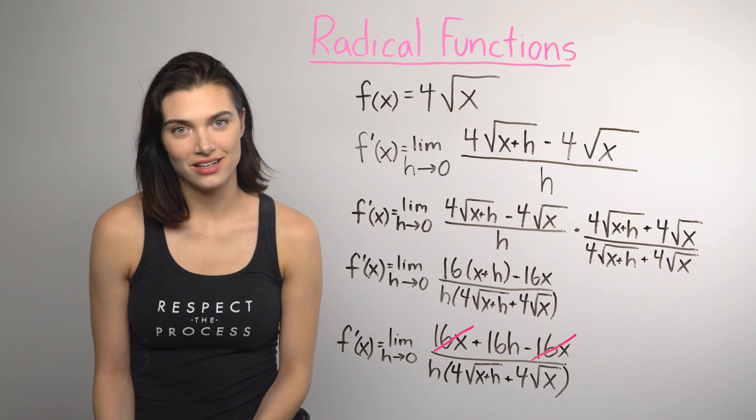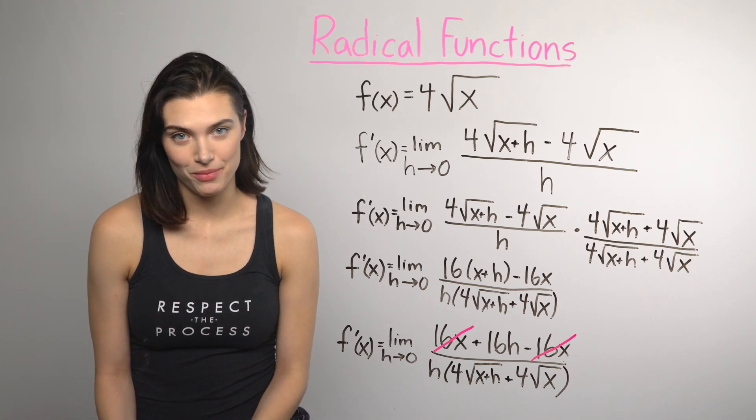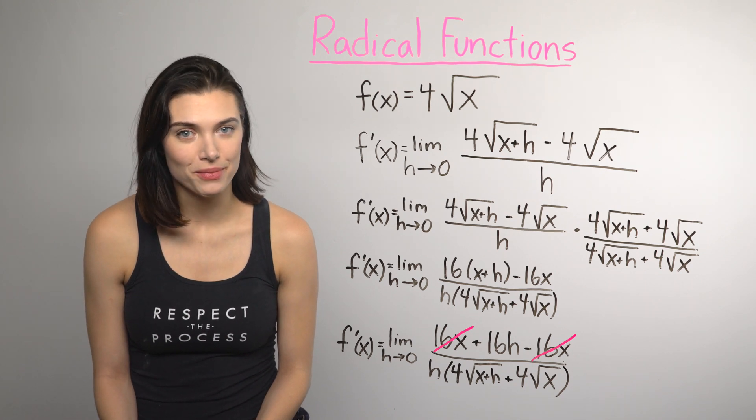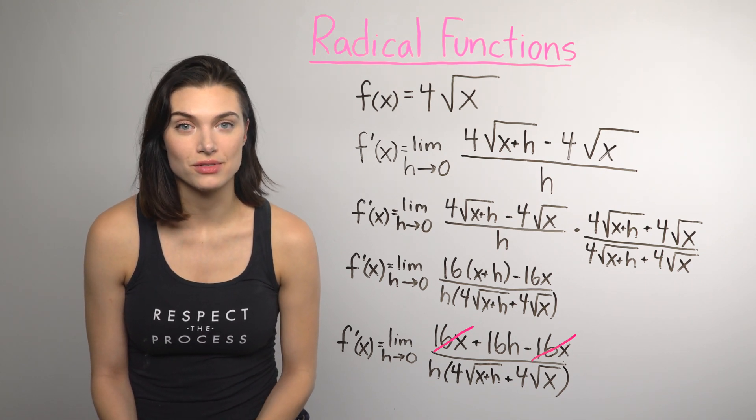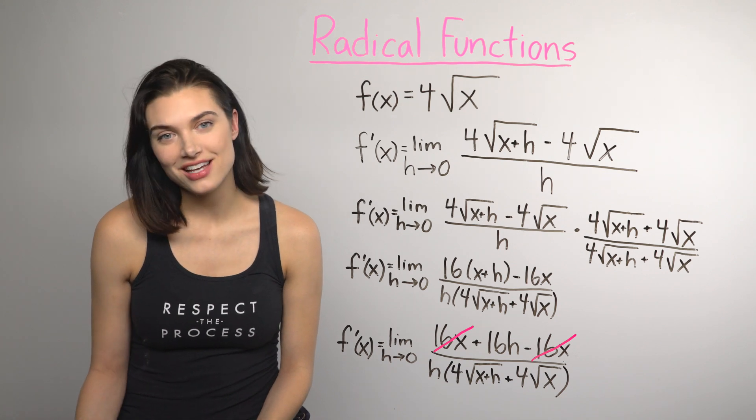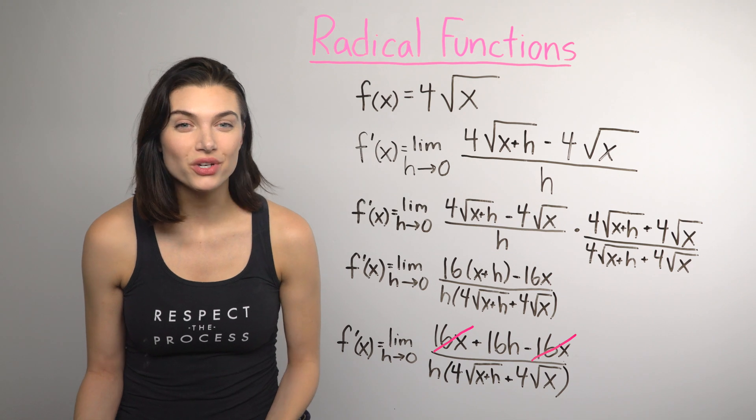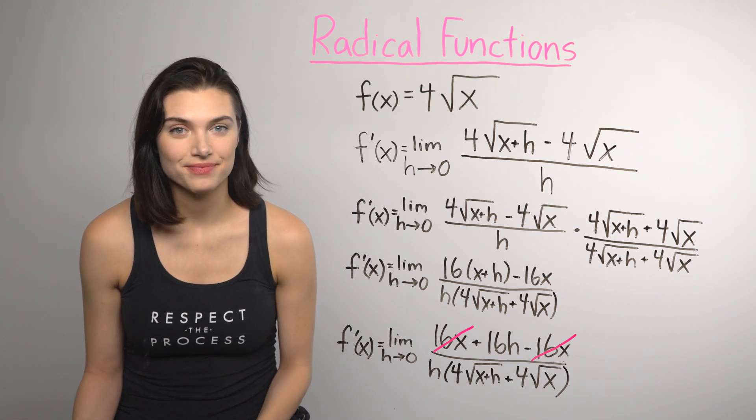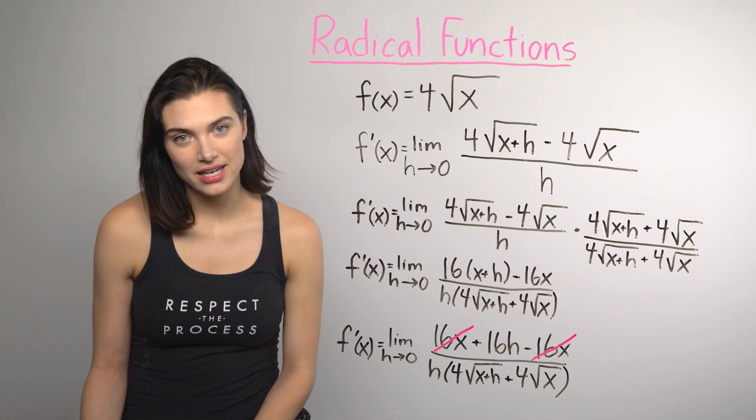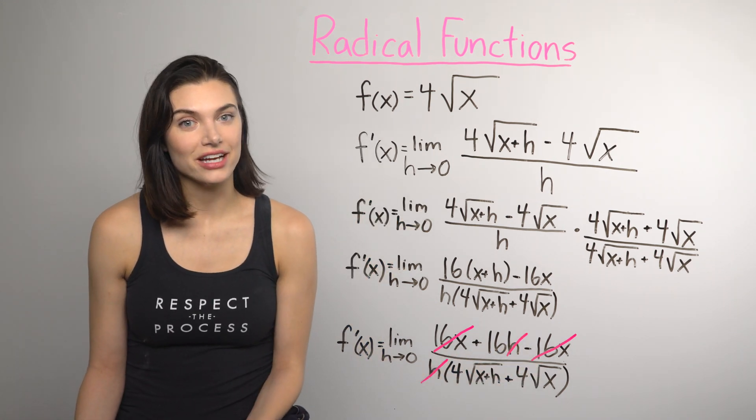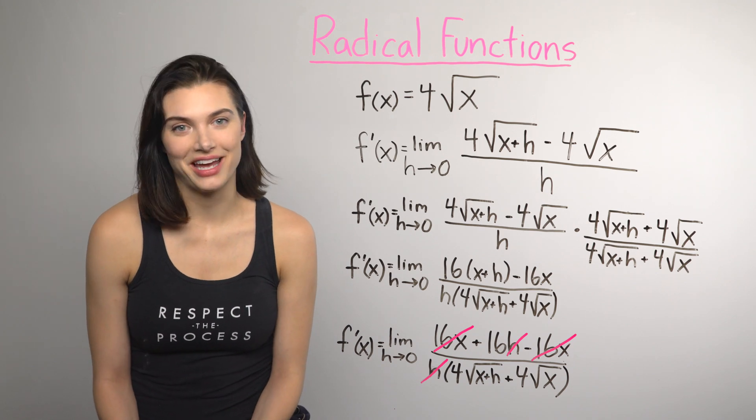When I multiplied by the conjugate, I didn't multiply out the denominator. Remember, the goal is to get rid of the h in the denominator that screws up direct substitution. A lot of the time, that's easier if you don't multiply out the denominator because we're looking for a way to cancel it out. And after I distributed and simplified, there's a way to cancel the h. So, it's starting to look like direct substitution is going to work again.